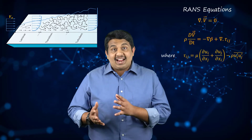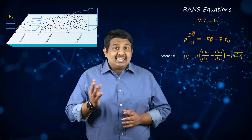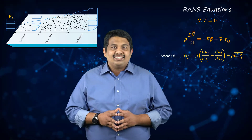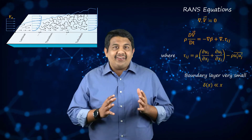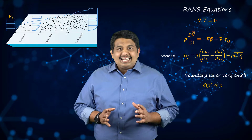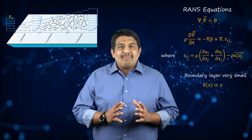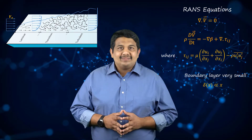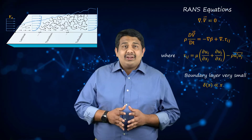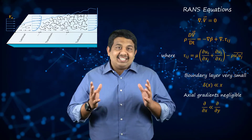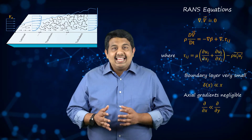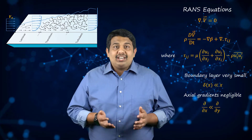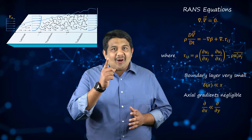Let us now consider the two-dimensional version of the RANS equations written in Cartesian coordinates. Because the boundary layer is a very thin region, its thickness is very small compared to the length of the plate. Furthermore, we can assume that the variation of properties in the streamwise direction is negligible compared to the variation in the wall-normal direction.